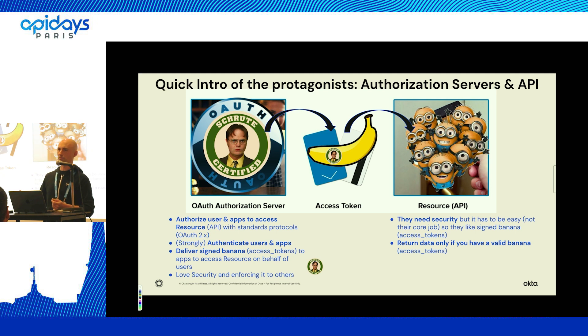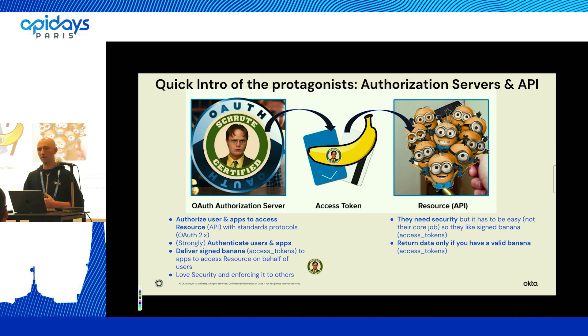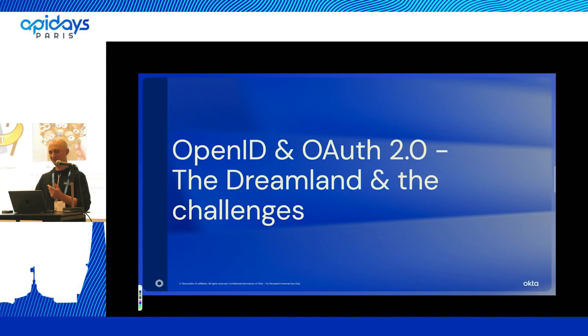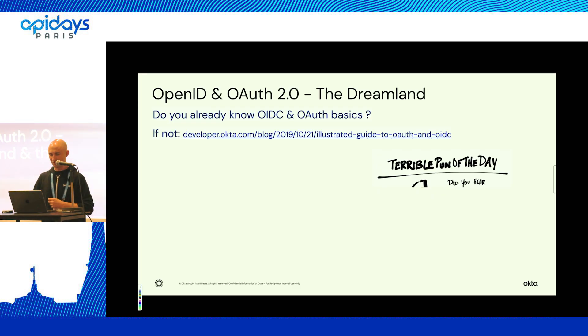Tokens are very practical for security teams because they can control all the APIs, see what's happening, and authorize access. For APIs, it's convenient because they need security, but security is complex — it's kind of easy to just trust a token, validate a token, and you're good to go. Validate that the token is valid and give access to the data.